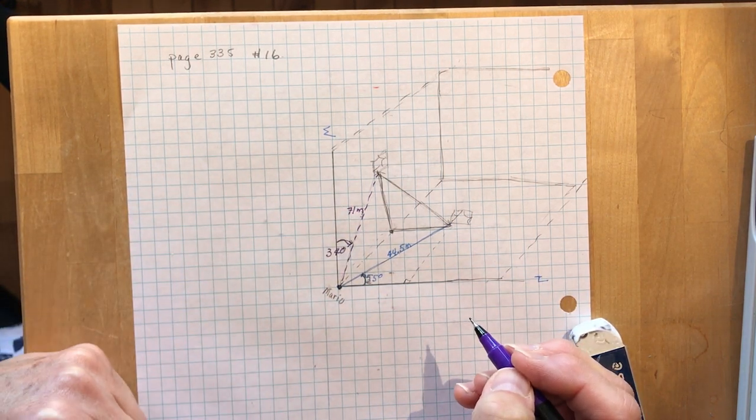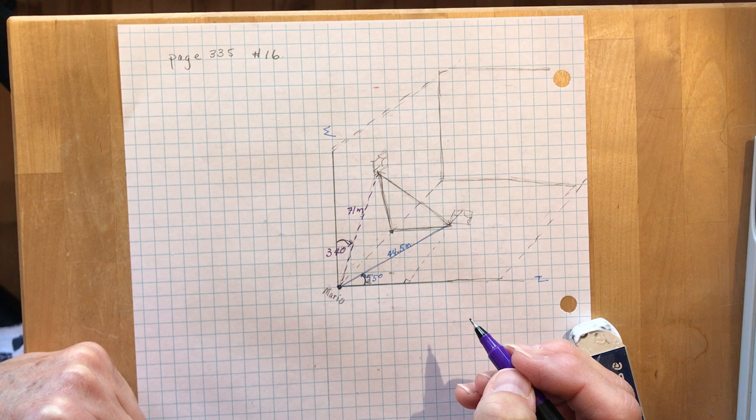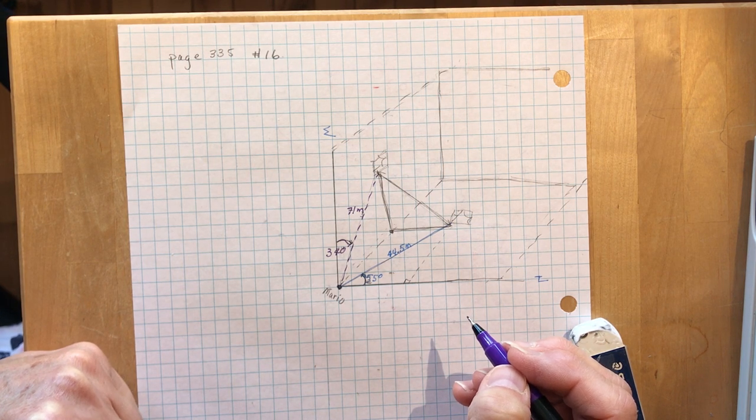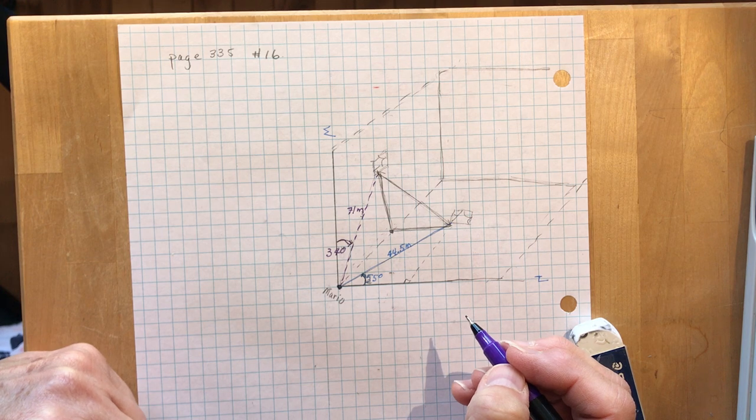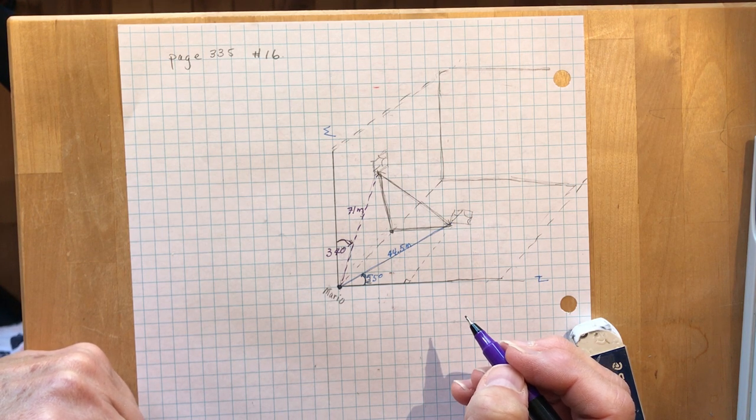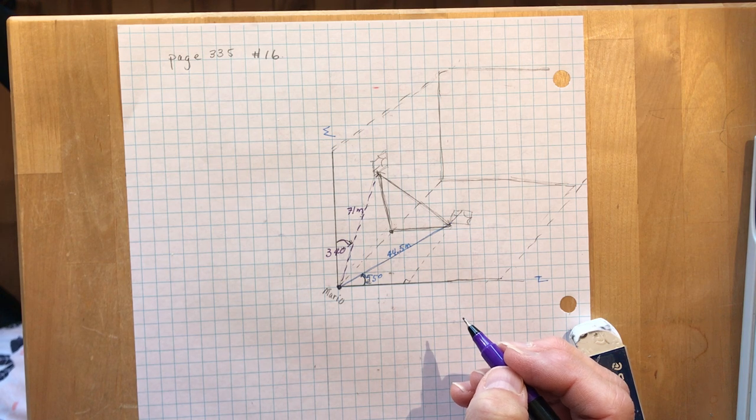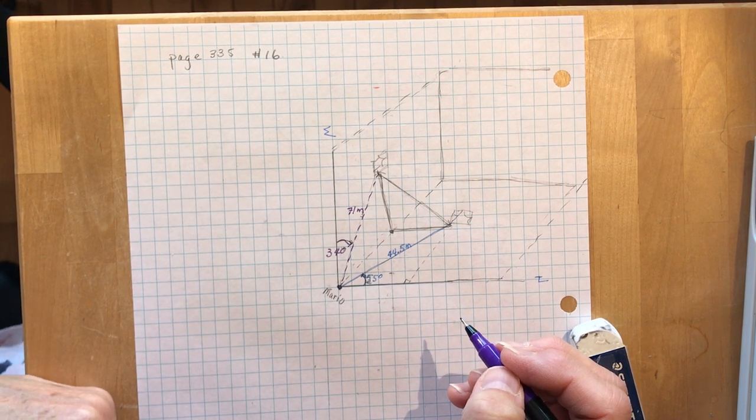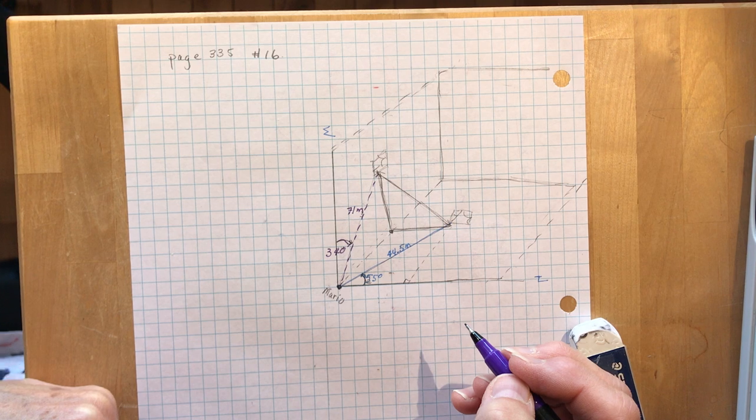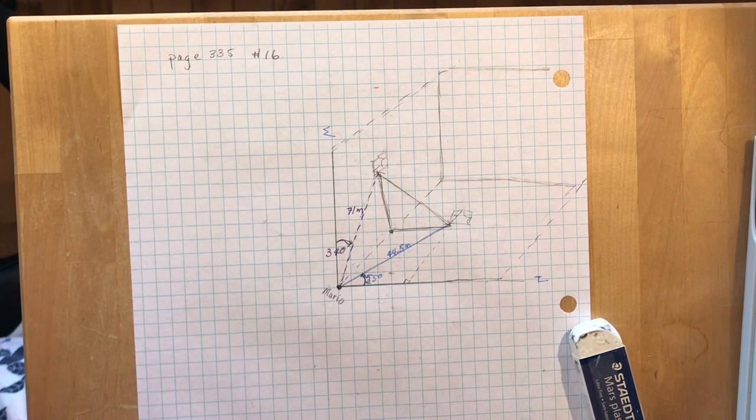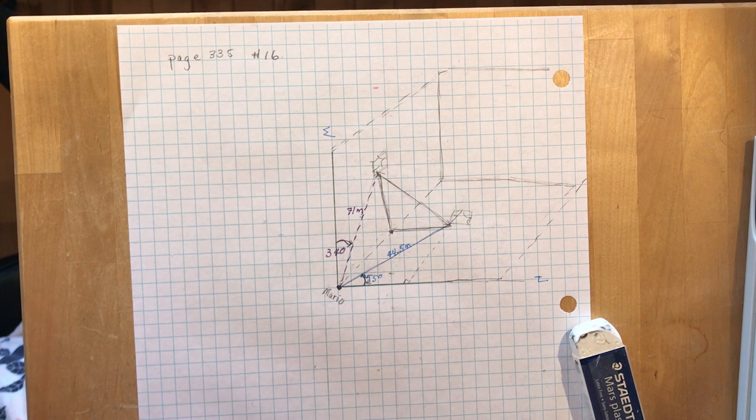Now the question asks you two things. If a rope were pulled taut from one window to the other around the outside of the building, how long to the nearest tenth of a meter would the rope need to be? And secondly, what is the straight line distance through the building between the two windows? Not sure why you would want to know that, but yes, that's what math problems are all about. Trying to confuse you, right?